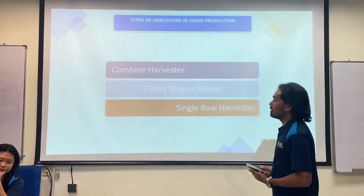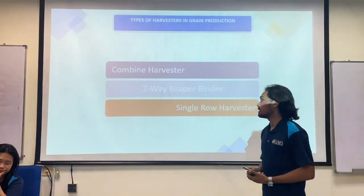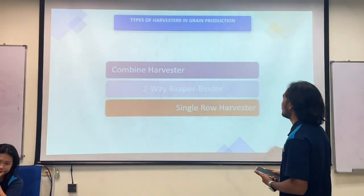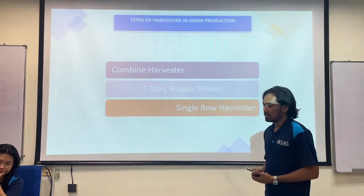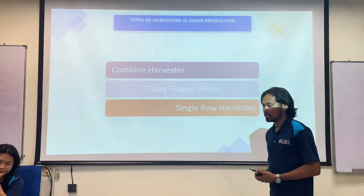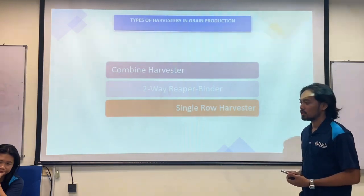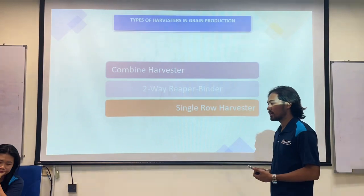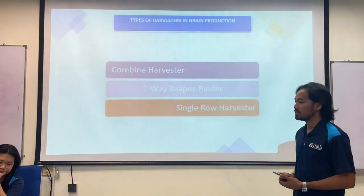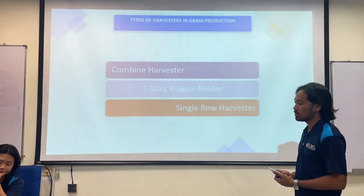For the types of harvesting in grain production, there are three types: the combined harvester, the two-way reaper binder, and the single-row harvester.